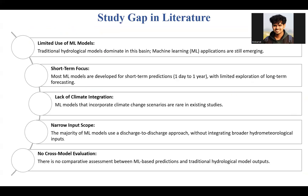The gaps I found in the literature are: machine learning is underused in this basin; the few machine learning models developed are for only short-term prediction, like one day to one month or maximum one year; most of those models do not incorporate climate change due to the short-term prediction horizon; their inputs are mainly discharge only; and there is no study where machine learning results are compared with hydrological model results.